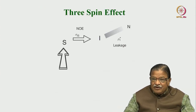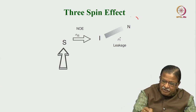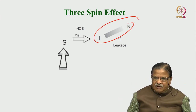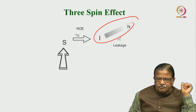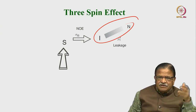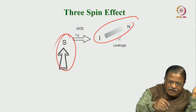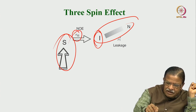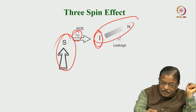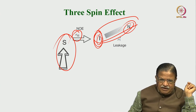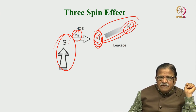There is another effect called the three-spin effect. We have to discuss that. All our understanding of NOE — omega tau_c, dipolar relaxation — was based on only two spins. It can so happen there are many neighboring spins — for example, three spins. I am irradiating proton S, and there is NOE because of cross relaxation with spin I. But there can be leakage: instead of gaining magnetization, spin I may lose it by giving it to another spin next to it. This is called leakage — the three-spin effect. It can cause problems.